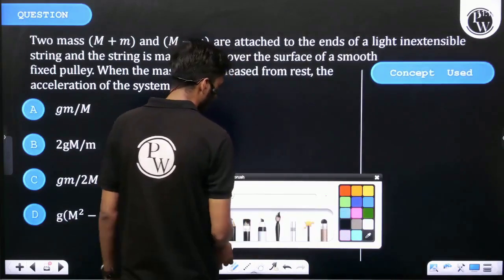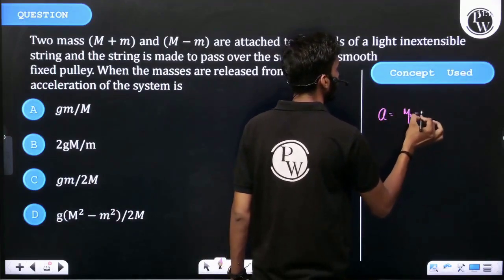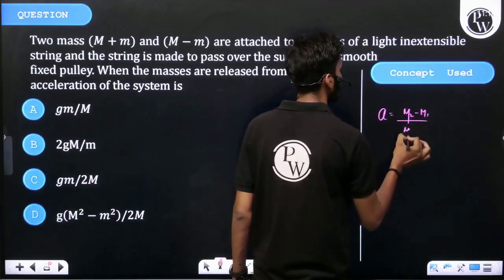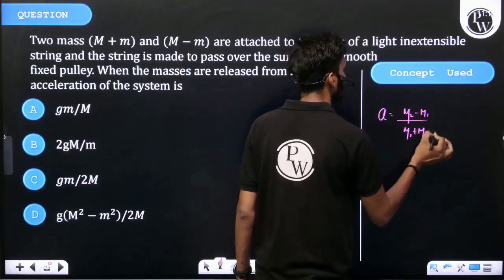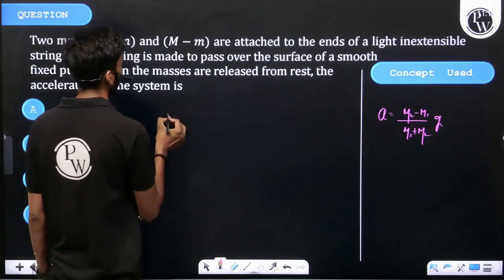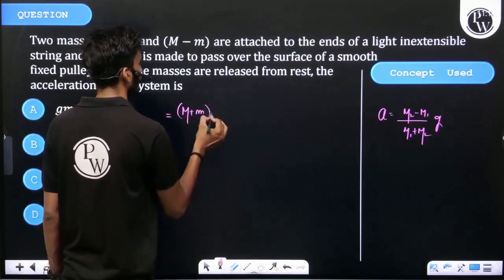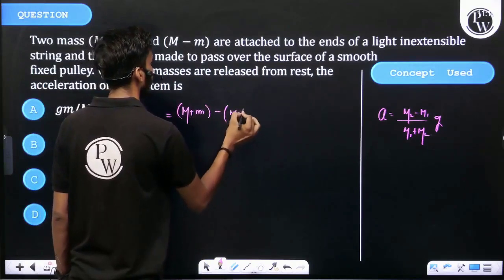So the acceleration of the system is equal to (m2 - m1) upon (m1 + m2) into g. Now put the value of capital M plus small m minus capital M minus small m upon...